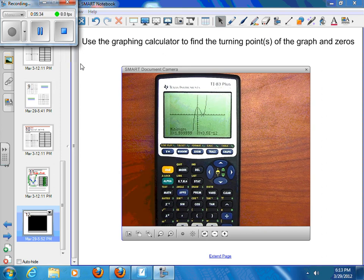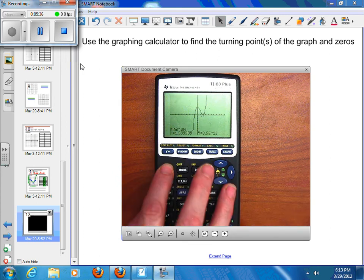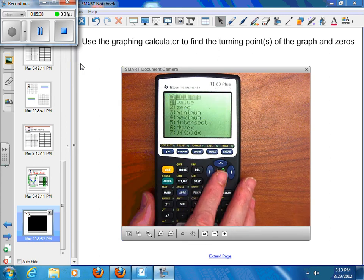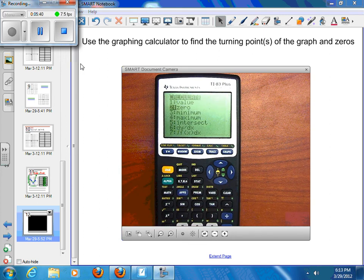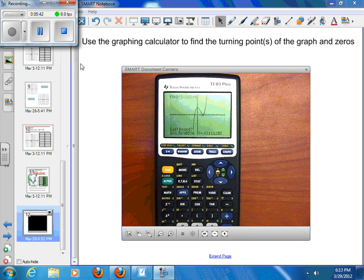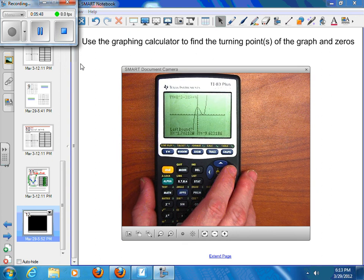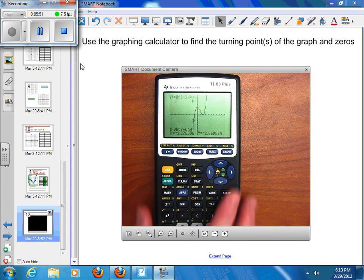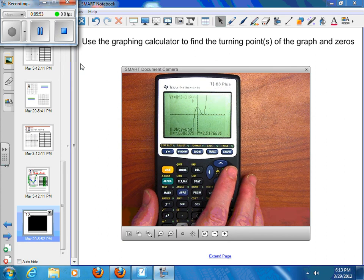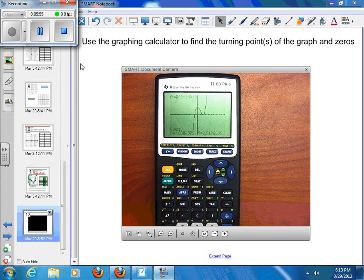And you can find your zeros. Again, if I go to second, calculate. And I want to find my zeros. Zero is option 2. It's going to ask for me for my left bound of my zero. So if I go to the left side of my first zero, I want my cursor there on the left side of it. Press enter. And then I want to be on the right side of my first zero. So I'm up in there. And I take a guess. And it says that my zero is at negative 1, 0. And I can do that again and find my other zero.